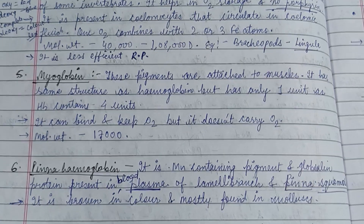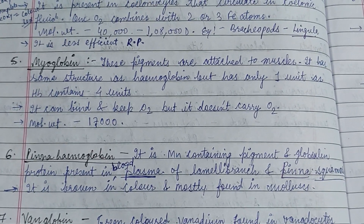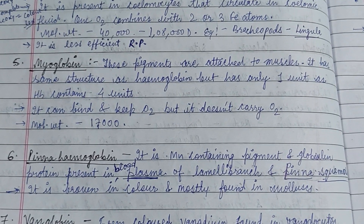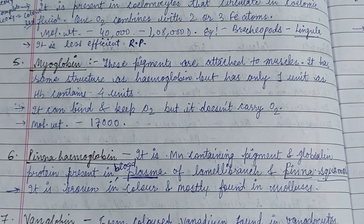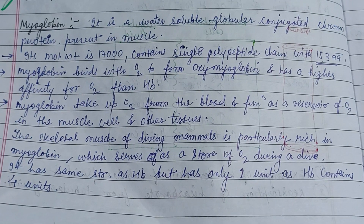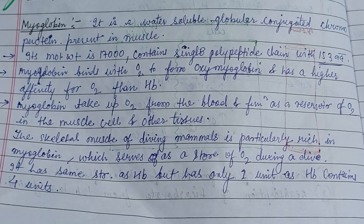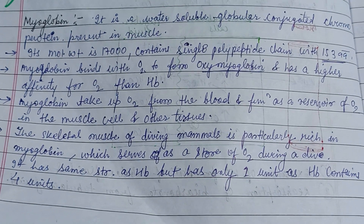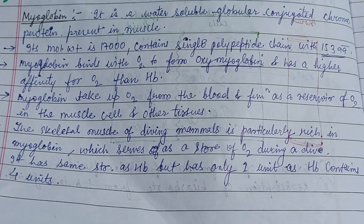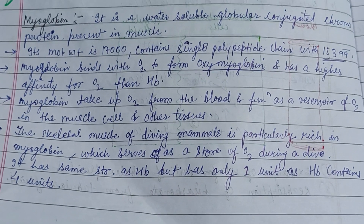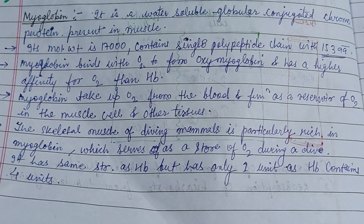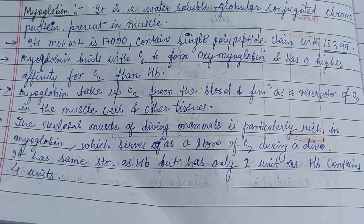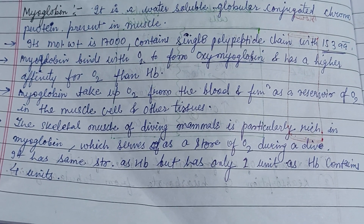Hemerythrin helps in oxygen storage and no porphyrin pigment is present. Myoglobin is attached to the muscle; it has the same structure as hemoglobin but has only one unit, while hemoglobin contains four units. Its molecular weight is about 17,000 and it contains a single polypeptide chain with 153 amino acids. Skeletal muscles of diving mammals are particularly rich in myoglobin, which serves as an oxygen store during a dive.